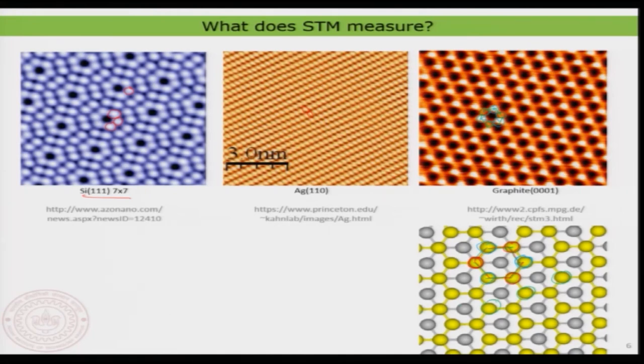Therefore the atoms with no second-layer neighbor are always brighter in the STM image, giving rise to a large hexagonal contrast in STM. This means the STM image of the surface is not simply a sketch of the atomic lattice, but rather a map of the electron density distributed around the surface atoms. This is quite important, and we will look into more details in upcoming lectures.